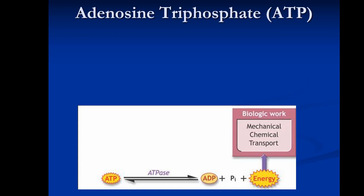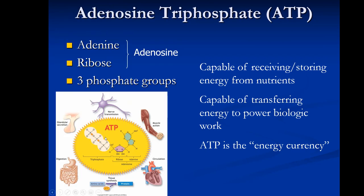The bulk of the energy in ATP is stored between the phosphate bonds. To get the energy out, you break those bonds — the easiest way is to break off that last phosphate, which leaves you with adenosine diphosphate (ADP) and a free phosphate, releasing energy in the process.